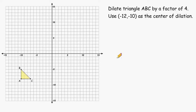The first thing that we have to do is locate the center of dilation, and negative 12, negative 10 is located right here. After locating your center of dilation, you must determine its distance to each of the three points of triangle ABC.